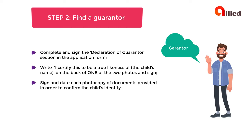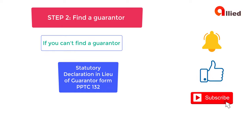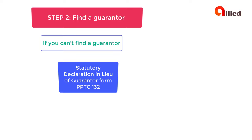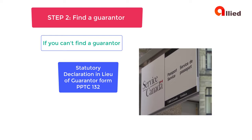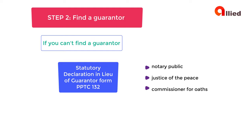The guarantor must fulfill the following tasks free of charge: complete and sign the Declaration of Guarantor section in the application form; write "I certify this to be a true likeness of" the child's name on the back of one of the two photos and sign it; sign and date each photocopy of documents provided in order to confirm the child's identity. If you can't find a guarantor, you must complete the Statutory Declaration in Lieu of Guarantor Form PPTC 132. This form is not available online. To get the form, go to the nearest Service Canada that provides passport service. You also need to find someone who can administer an oath to swear to and sign the form — this can be a notary public, justice of the peace, or commissioner for oaths. This person doesn't need to know you personally.